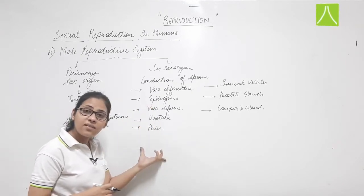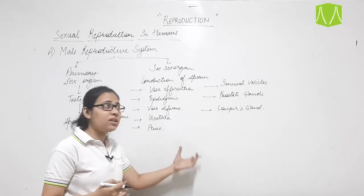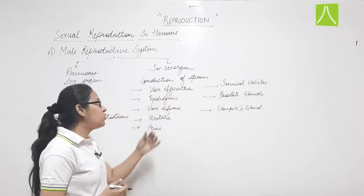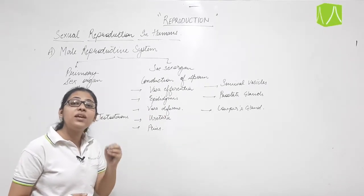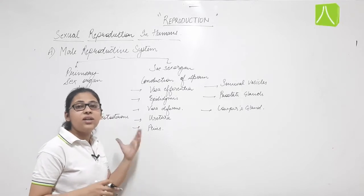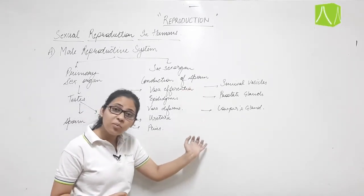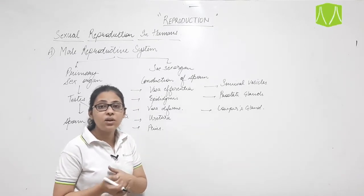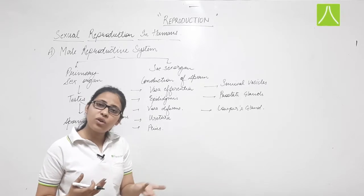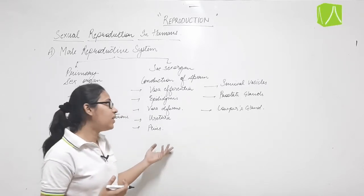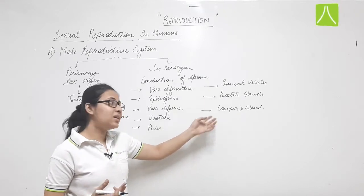Secondary sex organs carry sperm from the testes to the female's vagina — this is the conduction of sperm. The glands secrete chemicals that help in sperm conduction, provide nutrition to the sperm, increase their motility by providing energy so they can move up to the vagina of the female, and also provide lubrication.